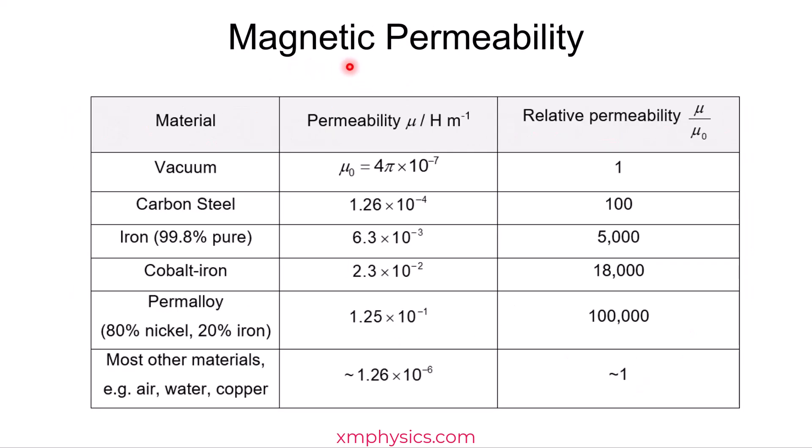So the magnetic permeability is actually a measure of how susceptible a substance is for its magnetic domains to align to an external magnetic field. And materials which are highly permeable, so materials which are easily magnetized, are called ferromagnetic.